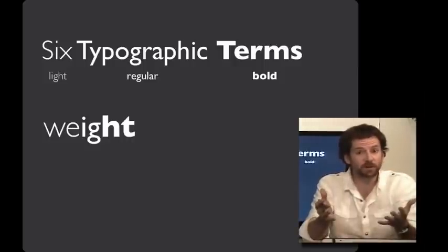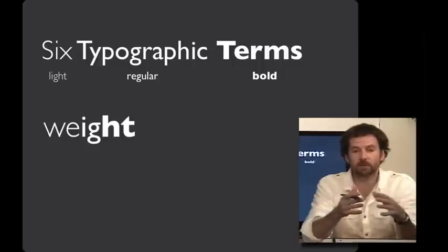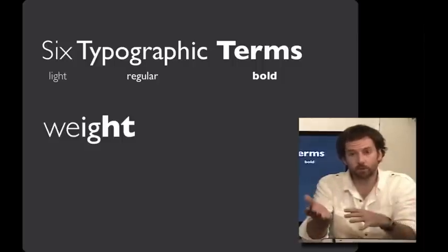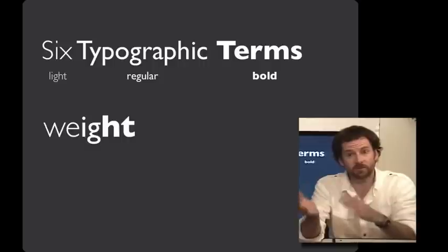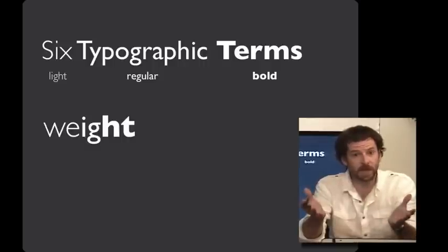Typefaces can also vary in their weight. So here we have an example of light on the left, regular or Roman in the middle, and bold on the right. Sometimes you'll see weights in between, like demi-bold or semi-bold, and even further to the right of bold, you'll see black.